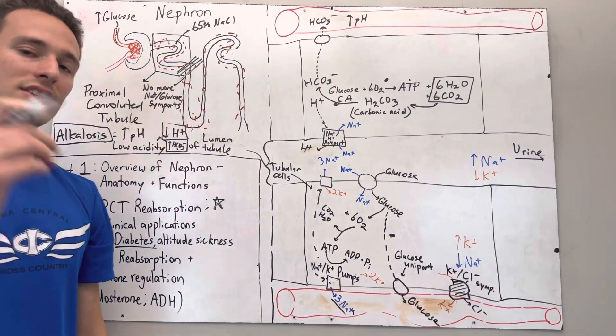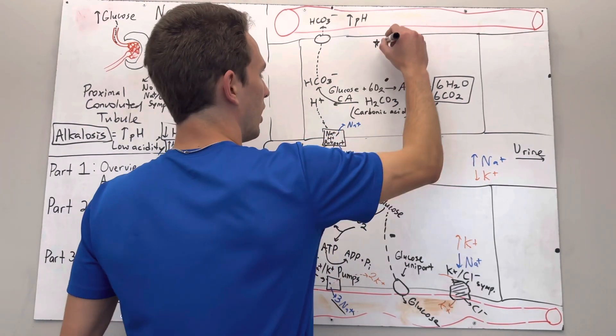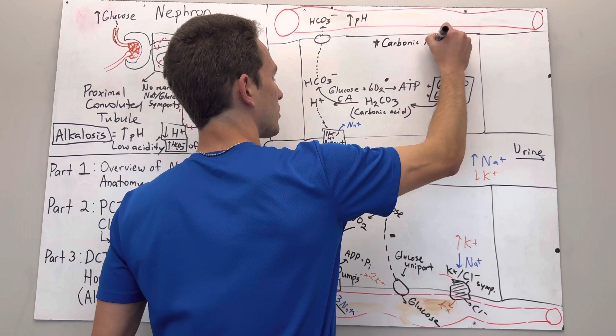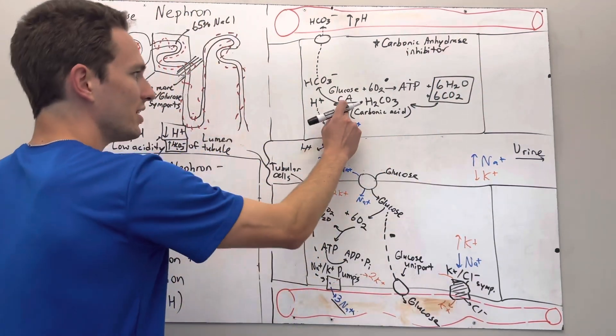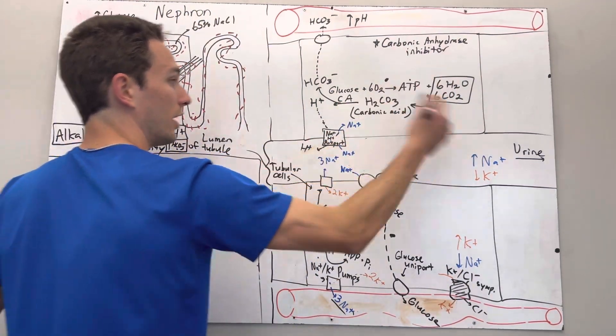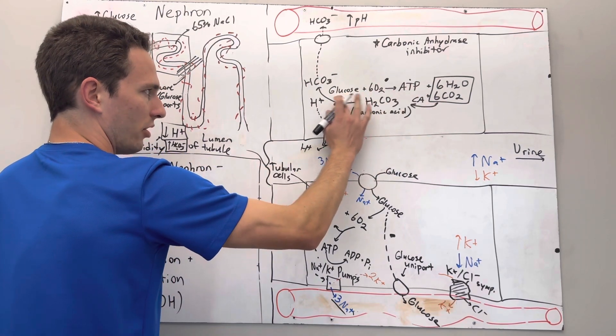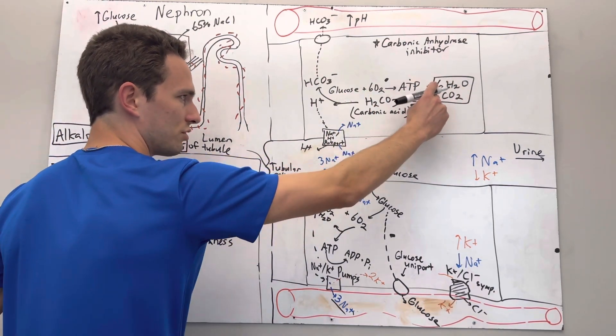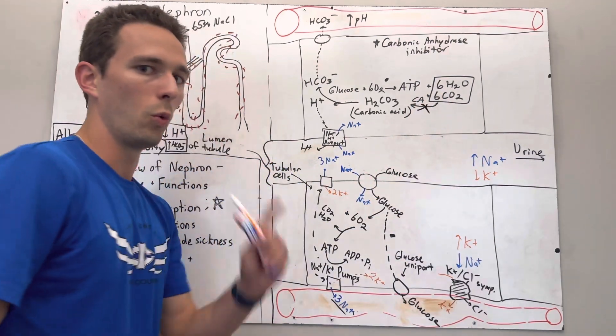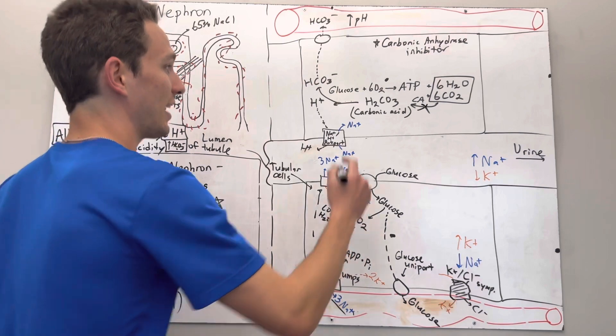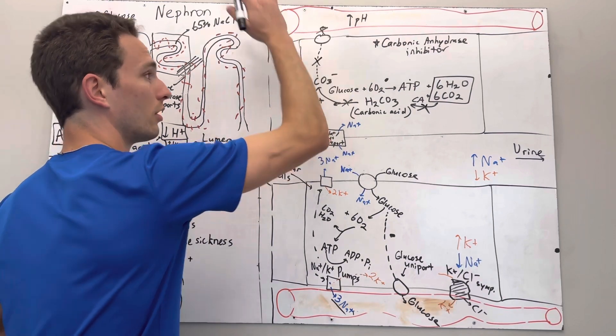So instead, you can take what's called a carbonic anhydrase inhibitor. You can take a drug that's called a carbonic anhydrase inhibitor. What the heck is a carbonic anhydrase again? Well, it was the enzyme that helped basically convert all this stuff, and it was actually here, too. Carbonic anhydrase is used for both reactions. Mostly here, though, I should say. So we'll primarily focus on that. So carbonic anhydrase transformed water and carbon dioxide into this acid. If we inhibit it, we don't produce this acid, do we? If we don't produce that acid, we don't produce bicarbonate. So bicarbonate stops being reabsorbed.